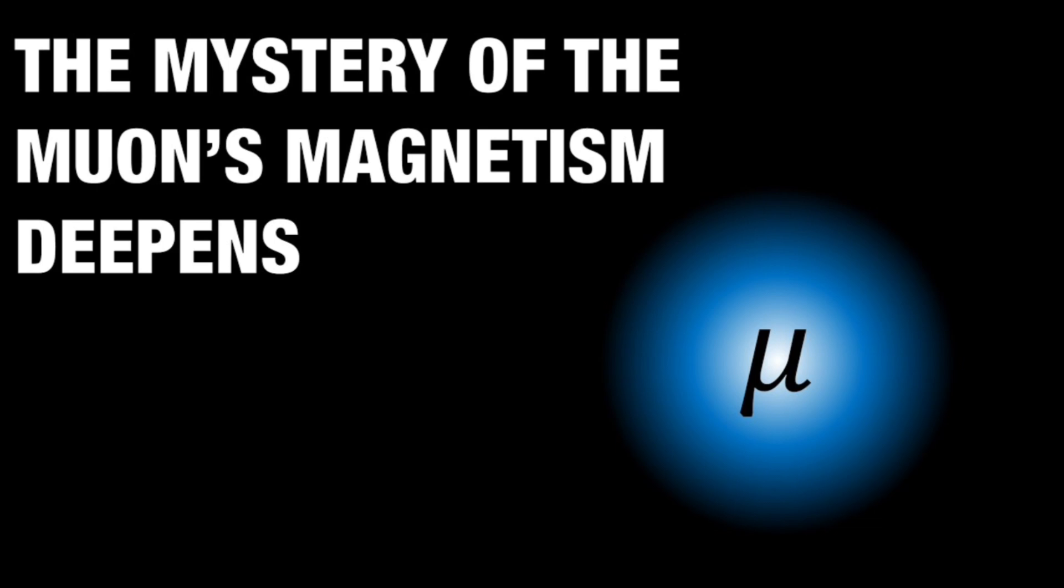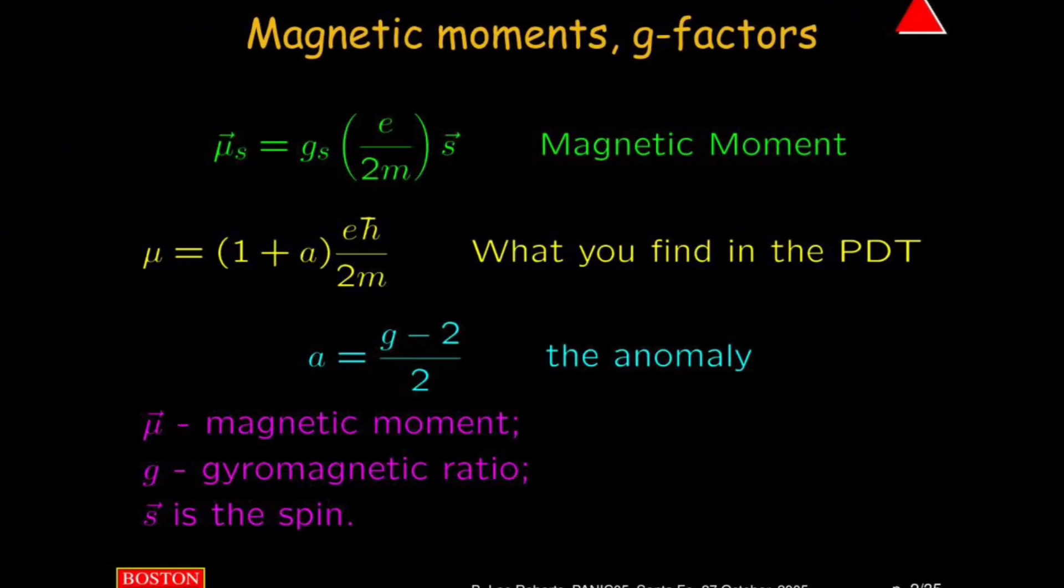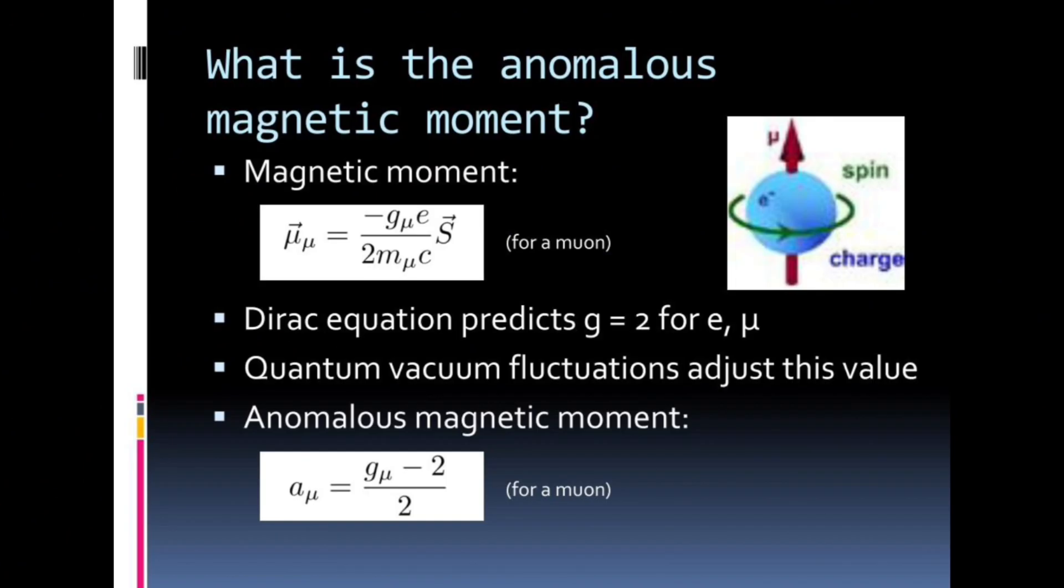This anomaly is significant because it could indicate the presence of new physics beyond the standard model. If the discrepancy is due to unknown particles or forces, it could help scientists understand some of the universe's unsolved mysteries, such as dark matter or the reason behind the mass of the Higgs boson.